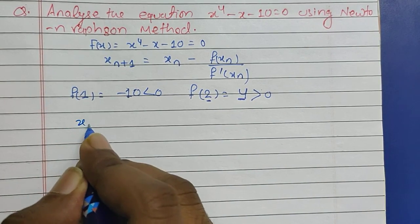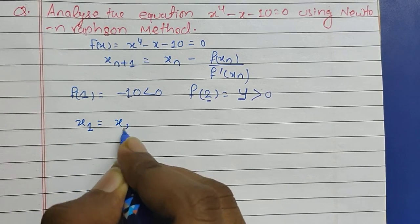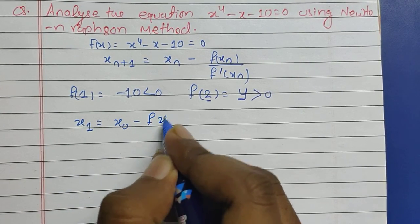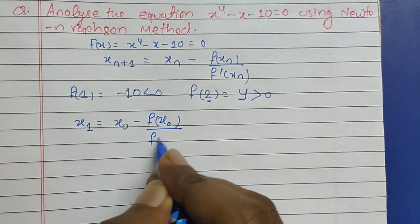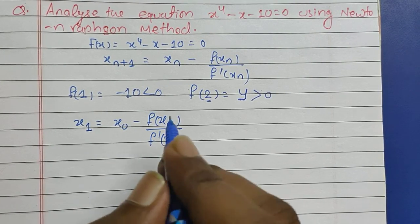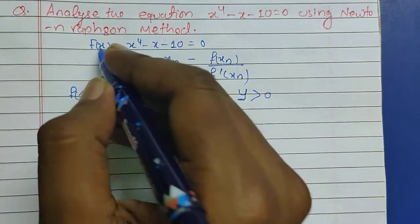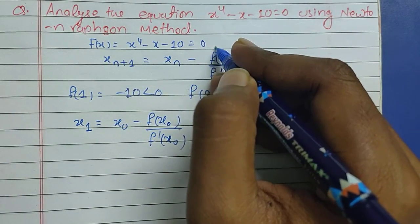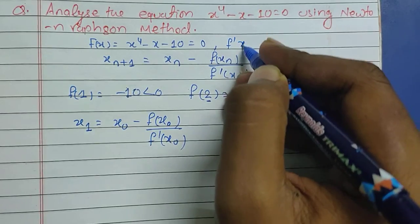We have x_1 = x_0 - f(x_0)/f'(x_0), and here the f' represents the derivative of f(x). On finding the derivative of f(x), we have f'(x) = 4x^3 - 1.